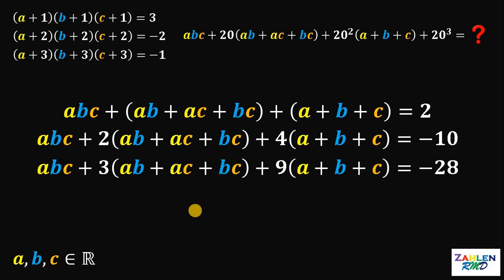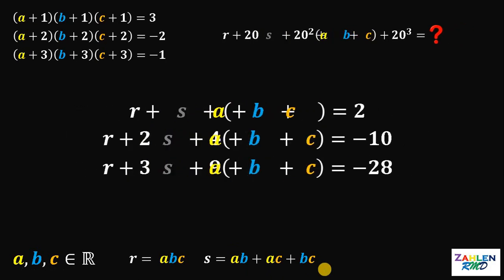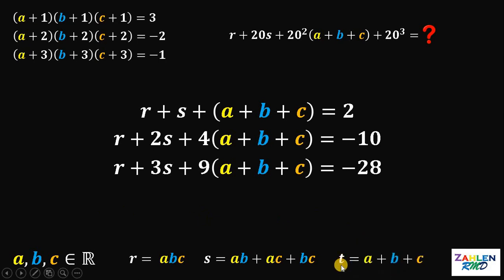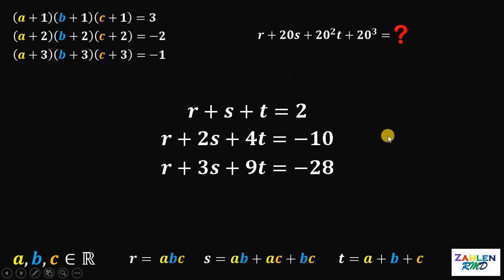To simplify, we introduce variables: let r = a times b times c, let s = ab + ac + bc, and let t = a + b + c. Substituting these into our three simplified equations, we now have three equations in r, s, and t, and we'll use the elimination method to solve for their values.